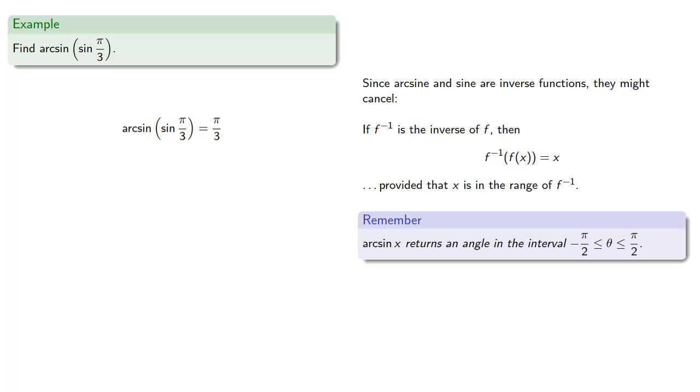It's important to remember that arc sine of x returns an angle in the interval between negative pi halves and positive pi halves. So we need to verify that our output is actually in the correct interval. Since pi thirds is between negative pi halves and pi halves, the arc sine of the sine of pi thirds is in fact pi thirds.